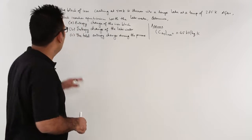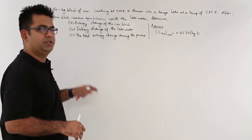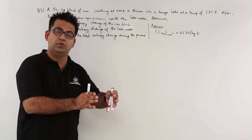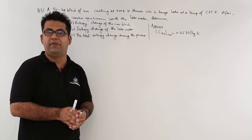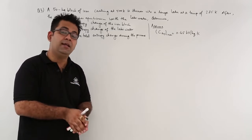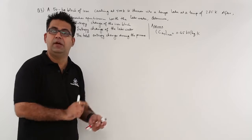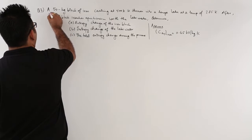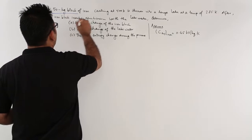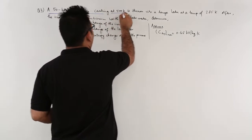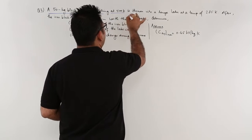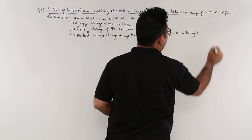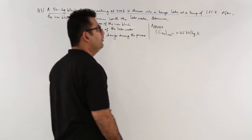Now let's look at one last question on the topic of entropy before we move on to the concept of availability, available energy and irreversibility. The question says: a 50 kg block of iron casting at 500 Kelvin is thrown into a large lake at a temperature of 285 Kelvin.